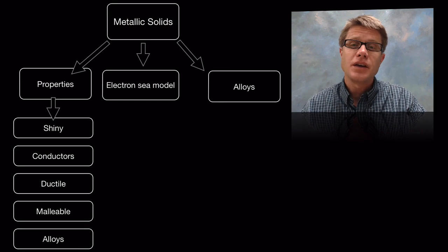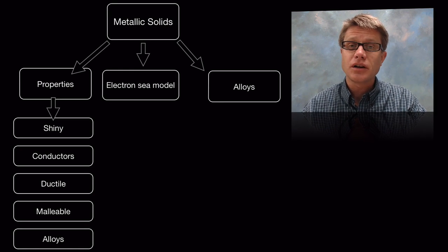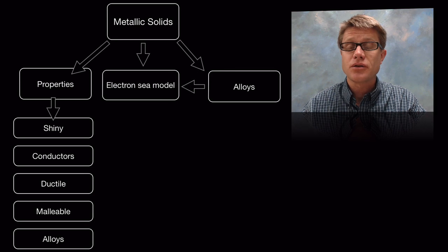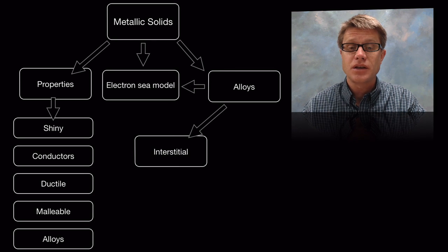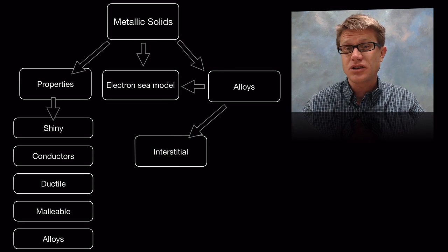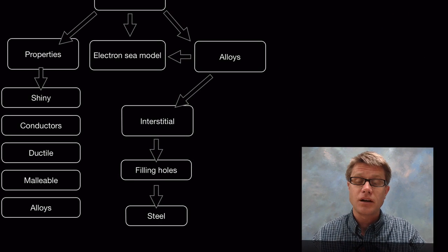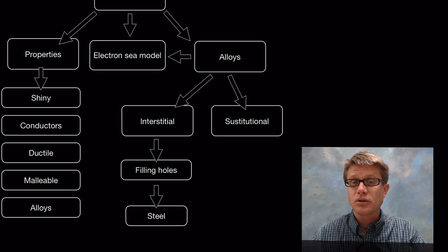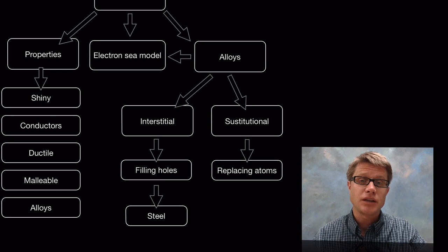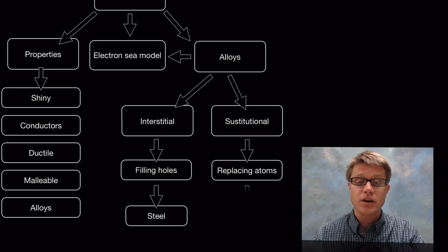They also can form alloys. The alloys that they form still are going to show that electron sea model. And so they're still going to have those same properties. The alloys can be broken down into interstitial alloys when we're actually filling holes in the middle itself with smaller atoms. Or they could be substitutional. Substitutional is when we're going to replace one of the atoms in the metal with a different atom.